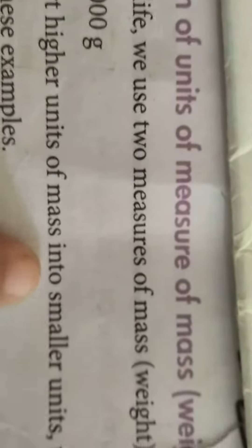1 kg is equal to 1000 grams. To convert higher units of mass into smaller units, we multiply. So 7 kg equals 7 times 1000 grams, which is 7000 grams.